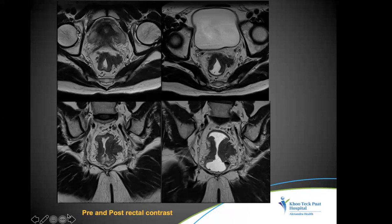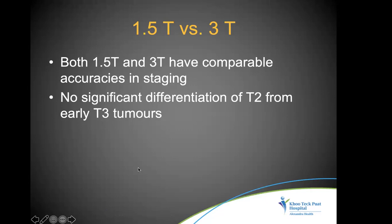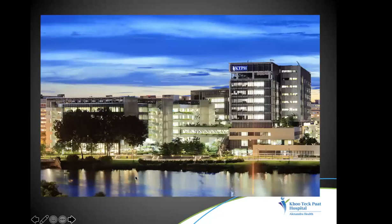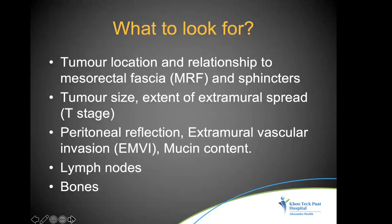Both 1.5 Tesla and 3 Tesla are comparable — there is no significant difference in differentiating T2 from T3 tumors. Three Tesla can have higher diffusion artifacts, but generally both field strengths are equally good.